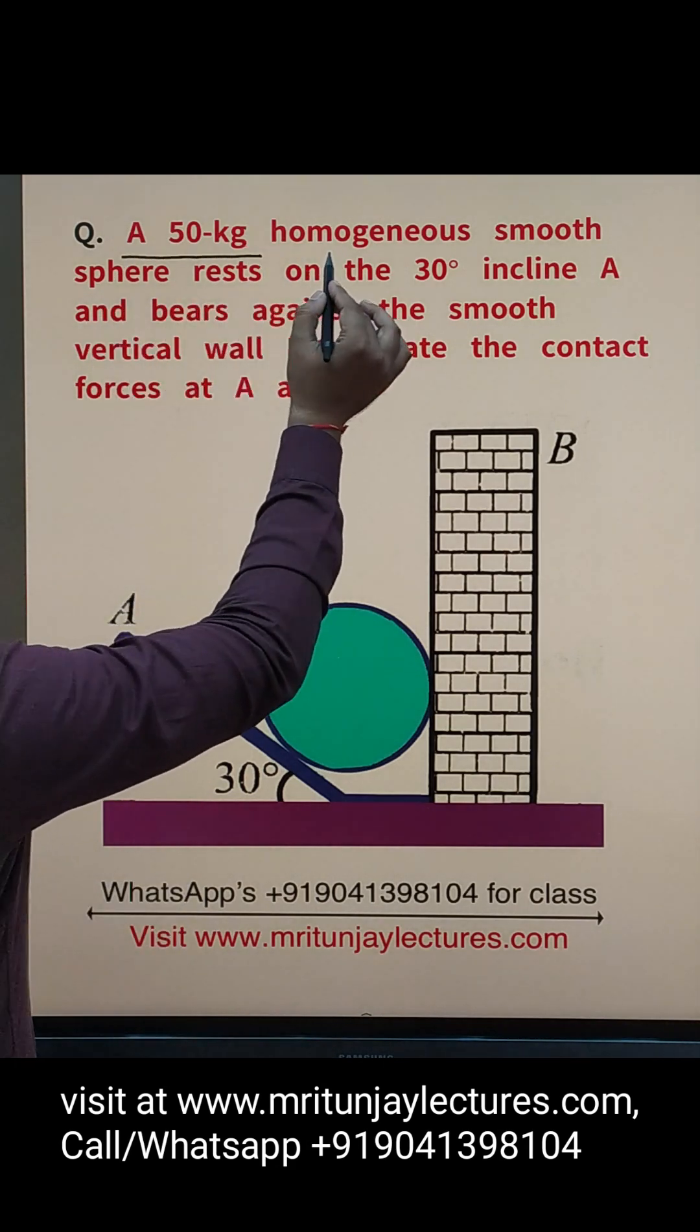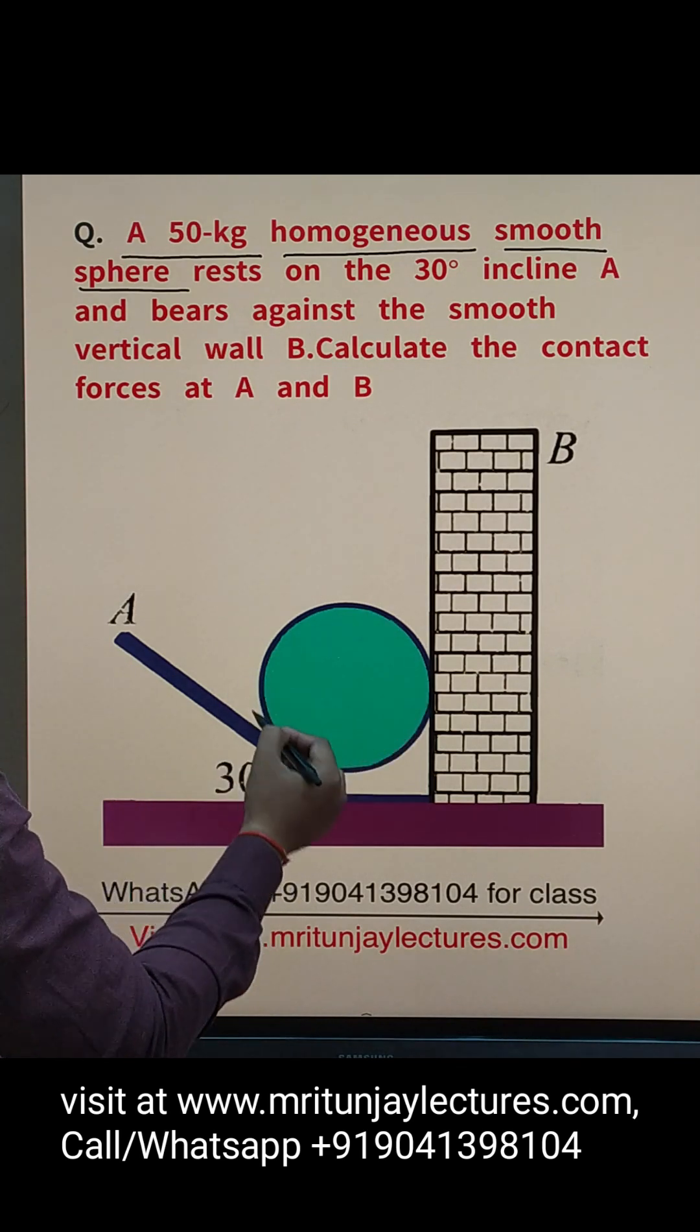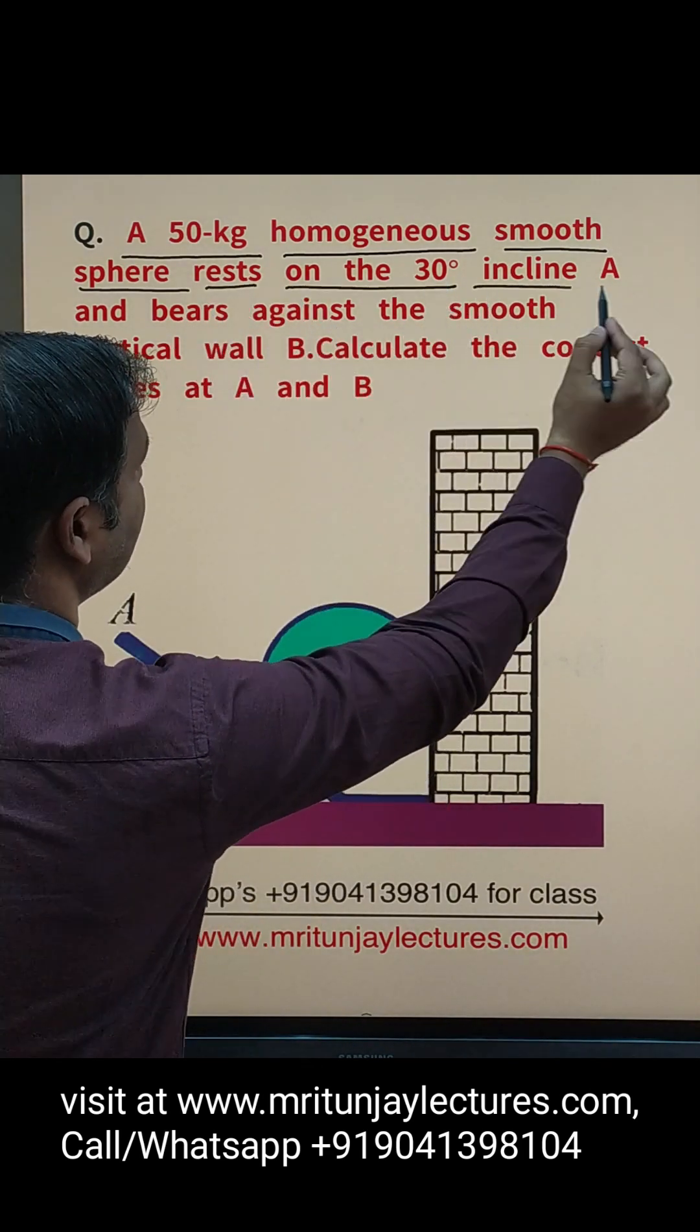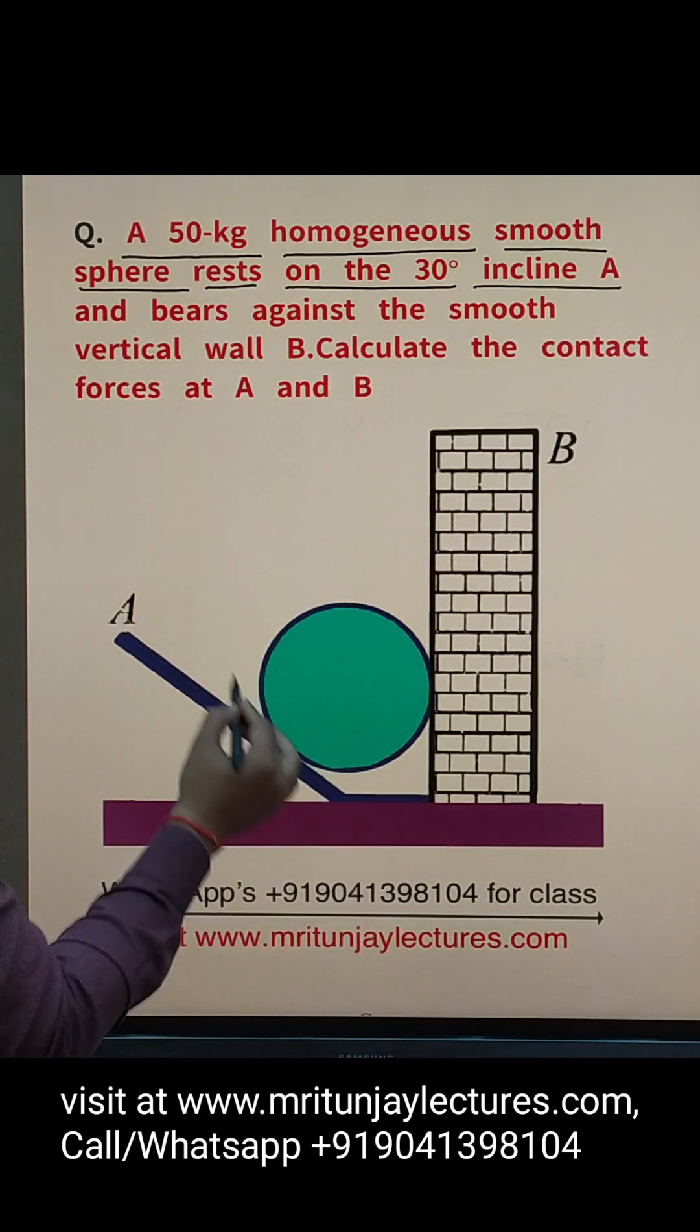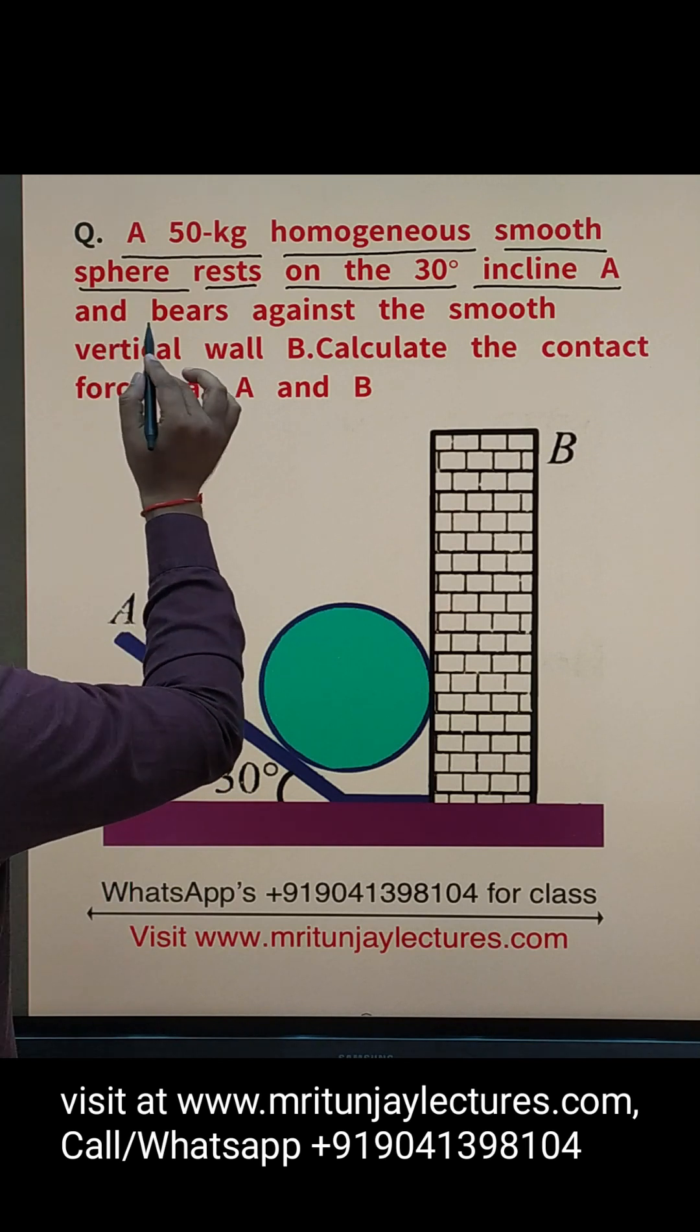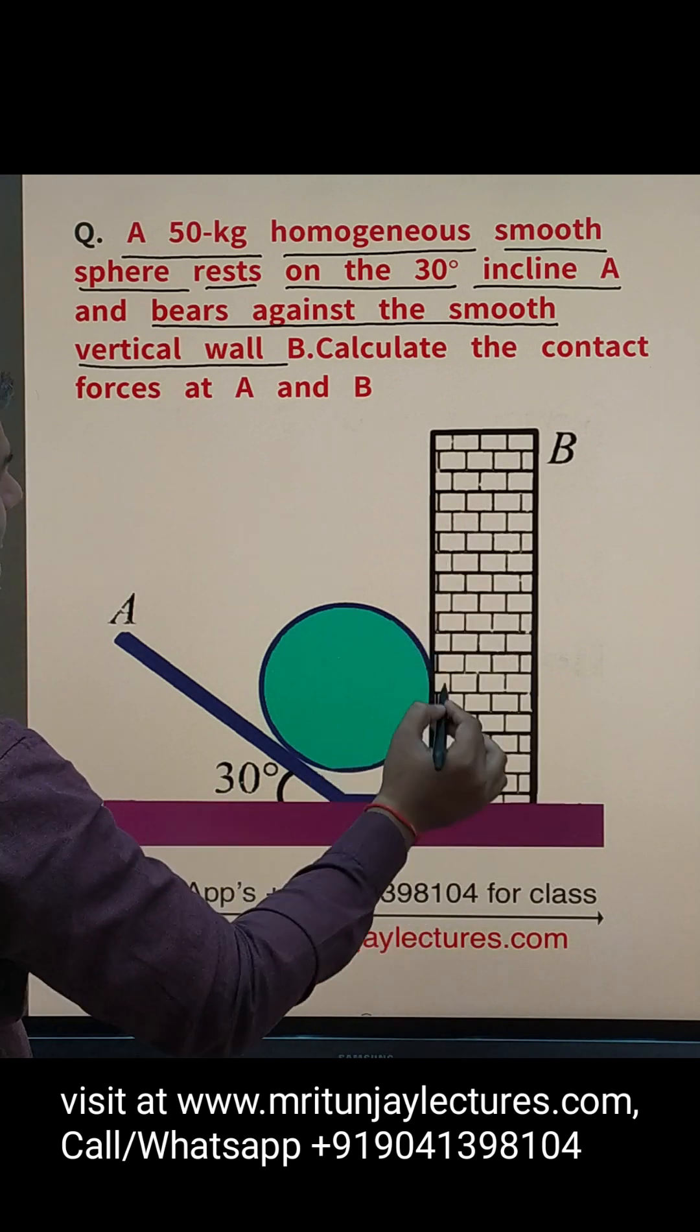Question of the day. A 50 kg homogeneous smooth sphere, that is smooth sphere, rests on a 30 degree incline A and bears against the smooth vertical wall B.